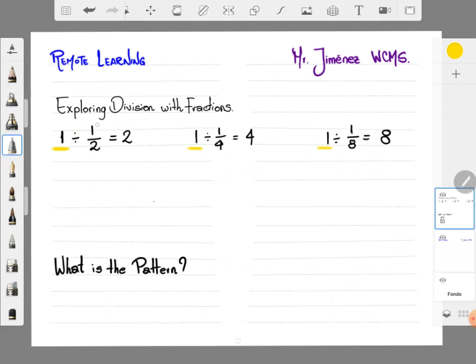Again we have unit fractions, so that means the top number, the numerator, is always the number 1. We need to identify the relationship between the number 1, the whole number, the number 2, the denominator, and again the number 2.